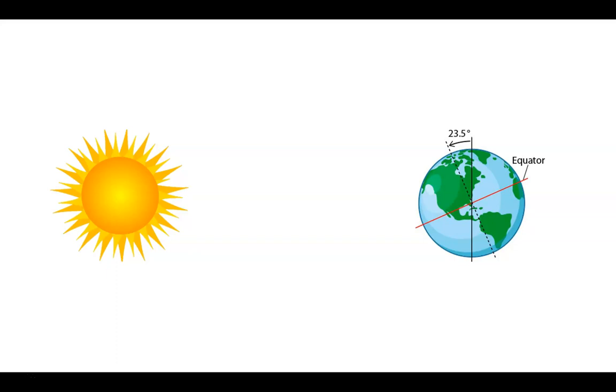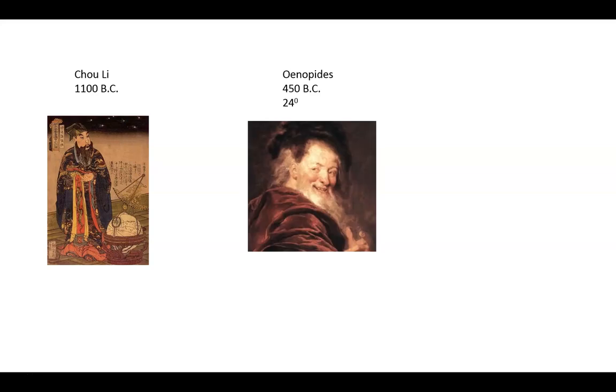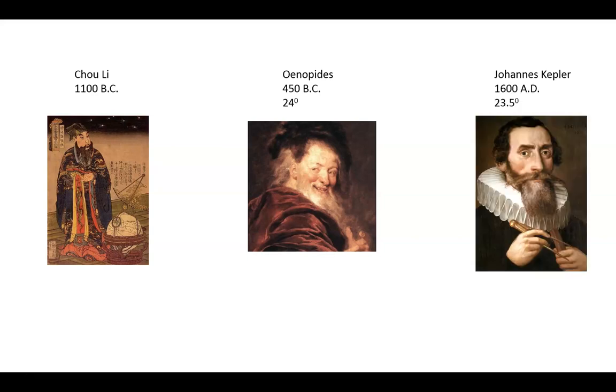Who first discovered this tilt? Around 1100 BC a Chinese astronomer named Chou Li made the first measurements. About 700 years later Greek geographers like Onapetus in 450 BC did make a measurement and obtained 24 degrees. And finally Johannes Kepler in Germany around 1600 AD obtained a quite accurate value of 23.5 degrees. So measuring the tilt of the earth has a very long history.